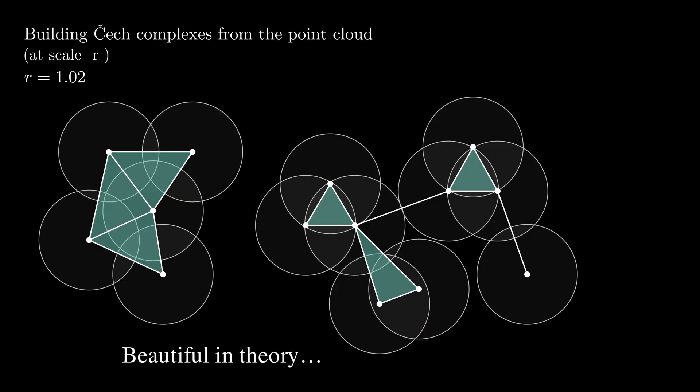Čech complexes are beautiful in theory by something called the nerve theorem. It states that the Čech complex has the same shape, technically the same homology, as the union of all those balls. But they are very expensive to compute since you need to check overlaps of many balls at once.